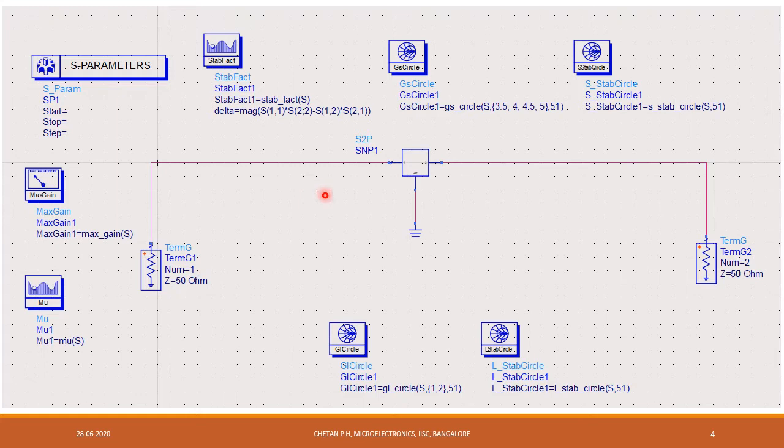After adding the file, in order to find the optimum gamma point, we need to create a simple test bench. I include several S parameter components here. This will give the stability factor of the circuit. This will give the constant gain circle, and in the constant gain circle component, these values are nothing but the gain of the circuit for which we need to plot the circles. This will give the stability circle, and similarly, these two will give the load gain circle and load stability circles.